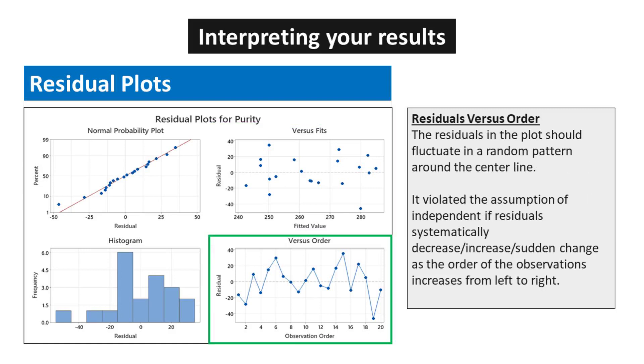For Residuals versus Order, the residuals in the plot should fluctuate in a random pattern around the center line. It violates the assumption of independence if residuals systematically decrease or increase or sudden change as the order of the observations increases from left to right.